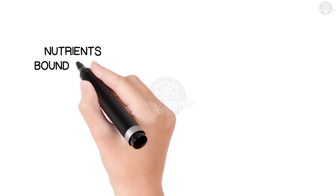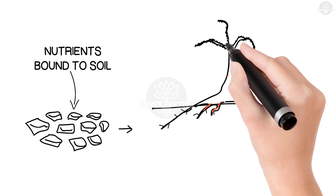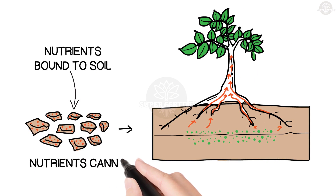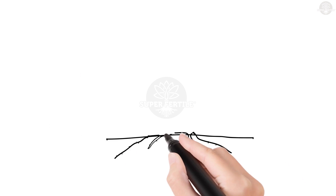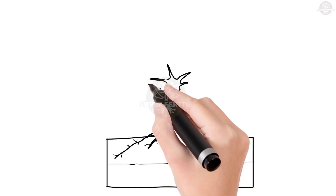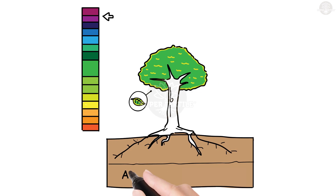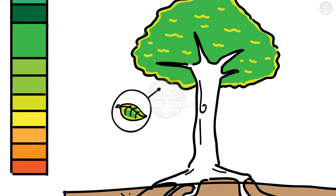Without good bacteria, minerals and nutrients get bound or stuck to the soil and are worthless to the plants because the plants cannot absorb them. High soil pH binds the nutrients to the soil, leaving minerals such as aluminum and manganese dormant, leading to yellowing of leaves.